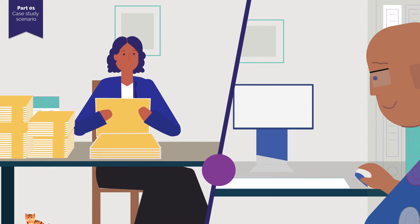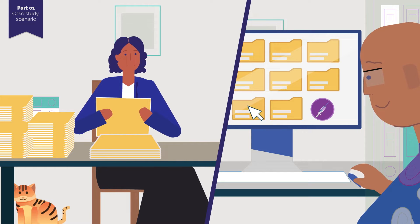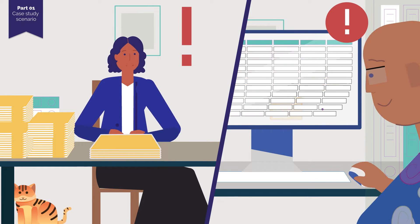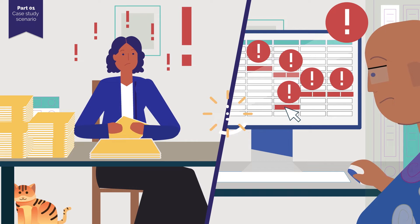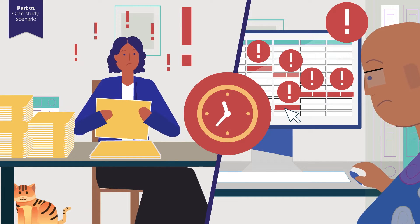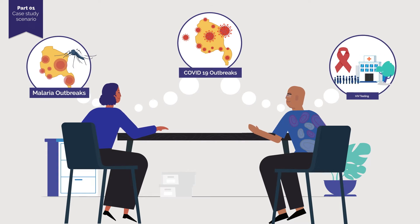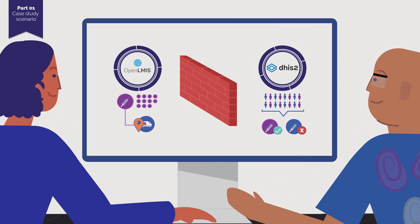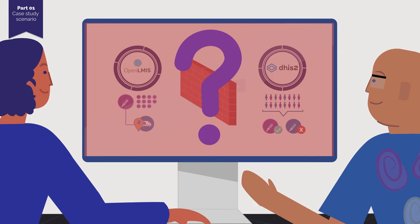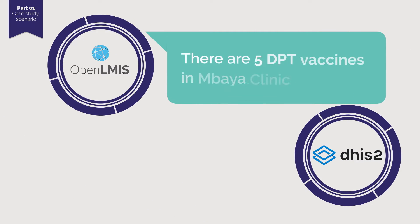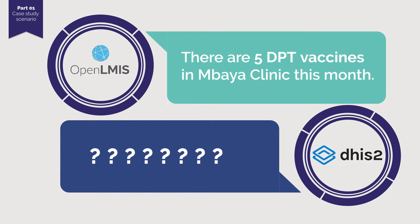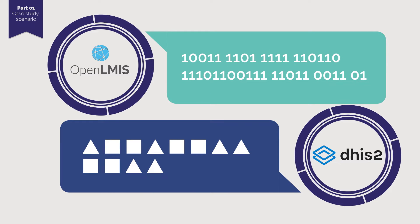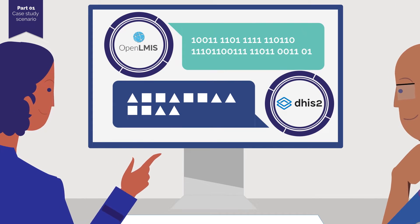Currently, to analyse the data in this format, it takes significant manual labour. And even still, sometimes the datasets do not align properly, resulting in less reliable and error-prone information. Ultimately, all this tedious effort leads to too much time managing and cleaning large and often inaccurate datasets, and not enough time making evidence-based, life-saving decisions. But why can't these two applications automatically exchange information with each other? When OpenLMIS tells DHIS2 there are five DPT vaccines in Umbaya Clinic this month, DHIS2 cannot understand OpenLMIS's shared messages because they use different vocabulary and grammar to describe the same data values. So how can we help people like Isaac and Lucy get these systems to communicate?